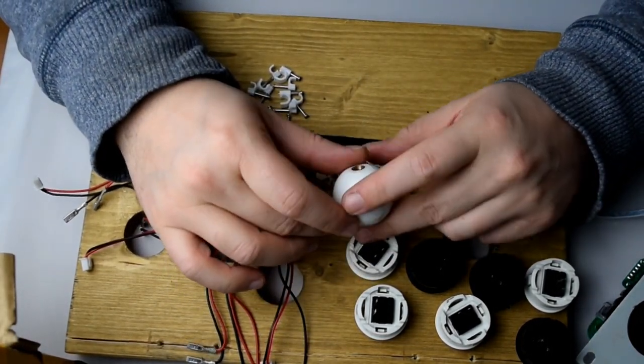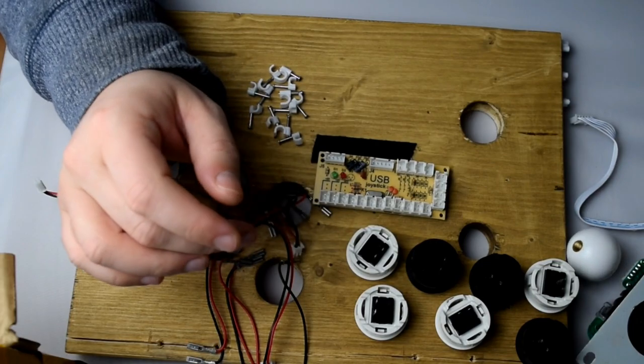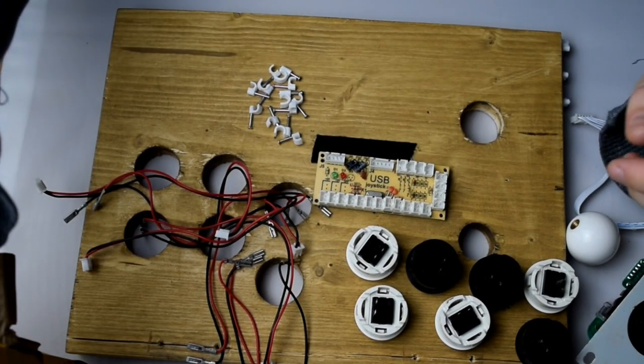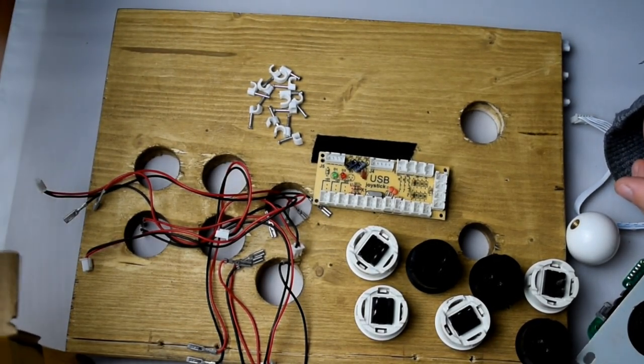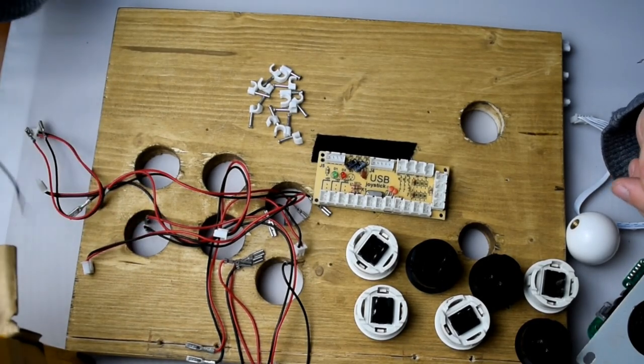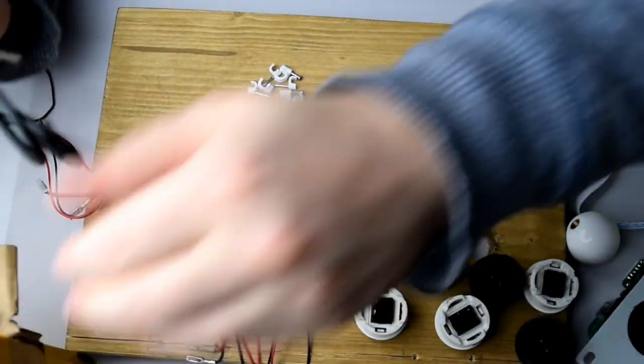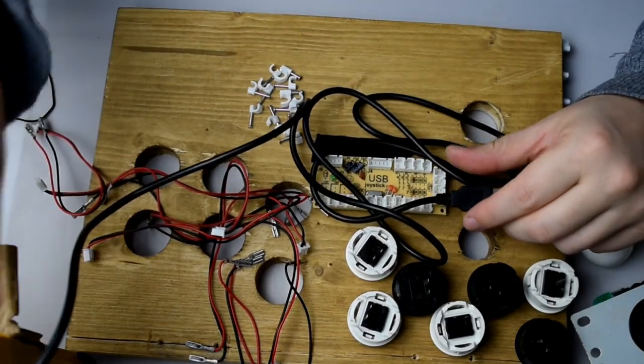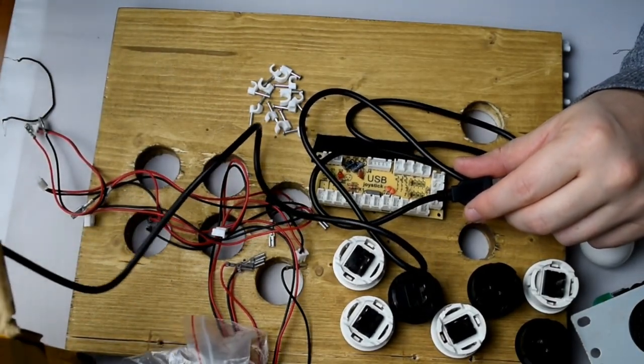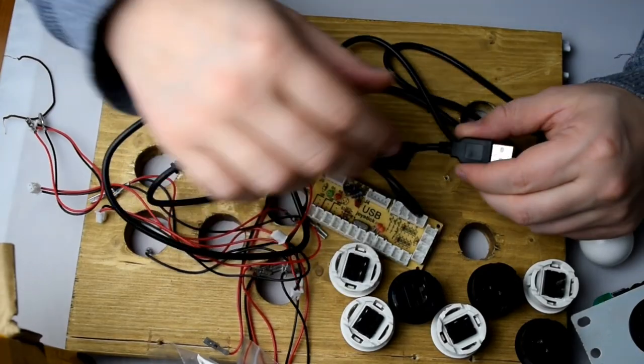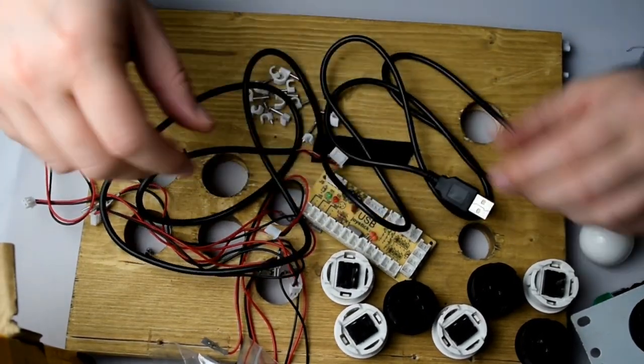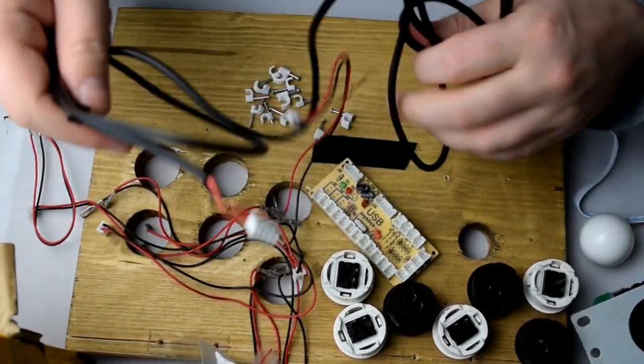We've got all the wiring—these are the wires for the buttons, the joystick wiring as well, and the joystick ball here. That's pretty much it. Obviously there's the cable here that plugs into the encoder and then you've got your USB that goes to your computer.